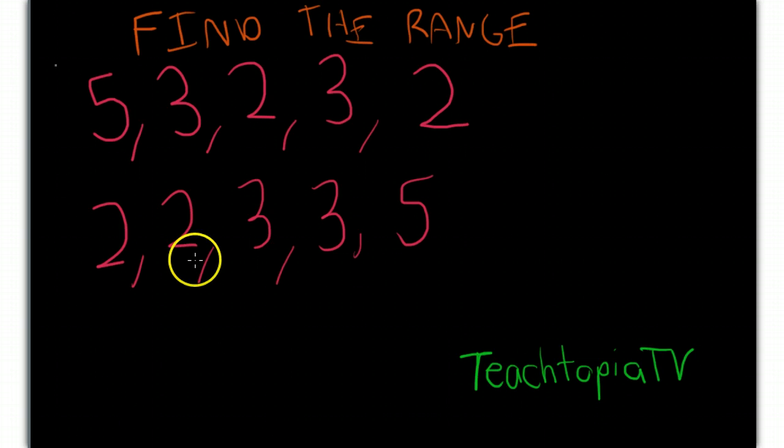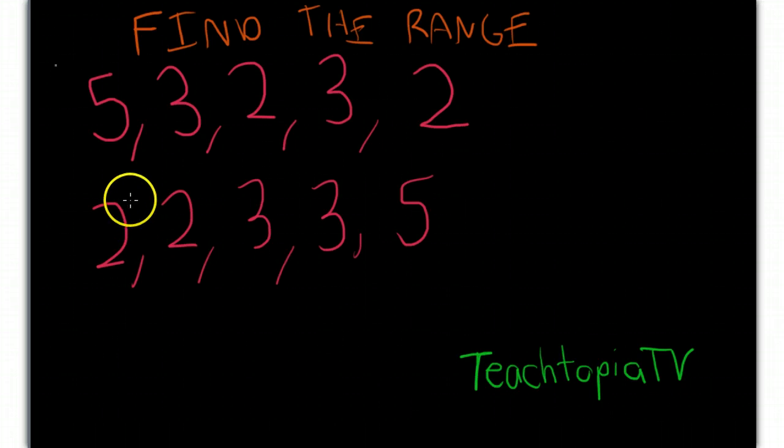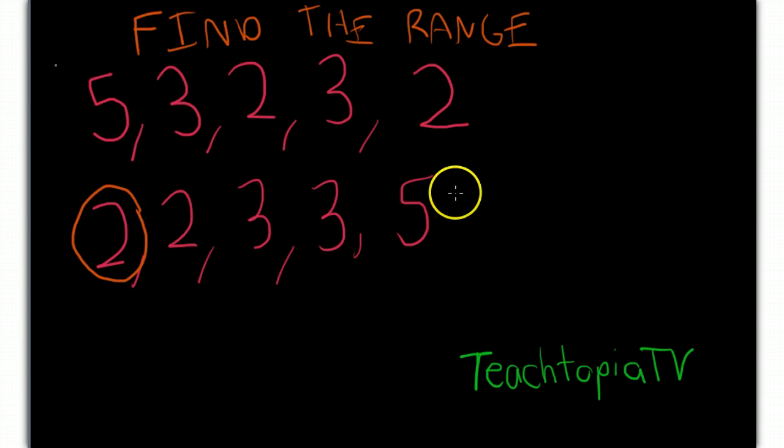What we simply do is we look for the number with the least value and the number with the greatest value. The number with the least value would be 2. The number with the greatest value would be 5. And all we do is find the difference of the number of the least and greatest value after we put them in order from least to greatest.